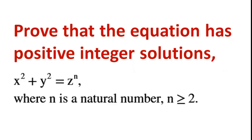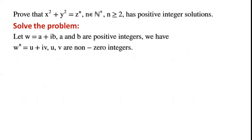Prove that the equation x² + y² = zⁿ has positive integer solutions, where n is a natural number and n is greater than or equal to 2. Let w = a + ib, where a and b are positive integers.